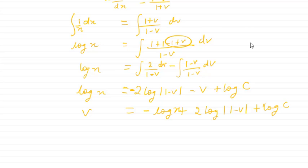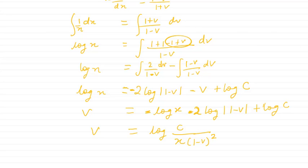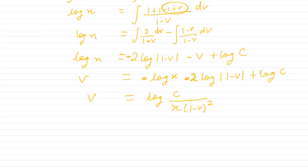Rearranging, I move v to one side: v = log x + 2·log(1 − v) + log c becomes, after moving log x to the left, −log x − 2·log(1 − v) + log c. Combining the log terms, this can be written as log of c divided by x·(1 − v)².